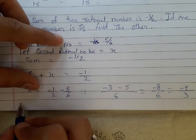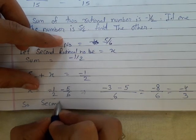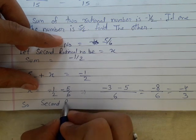The second rational number is, hence second rational number is minus 4 upon 3.